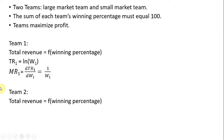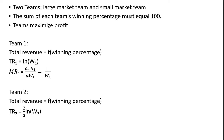Team 2, the small market team, has total revenue that is two-thirds times the natural log of its winning percentage. You'll notice here that for any given winning percentage, team 1 will have more revenue. Perhaps its fans have a higher willingness to pay, or maybe team 1 operates in an area with more people, thus higher demand, and so on.